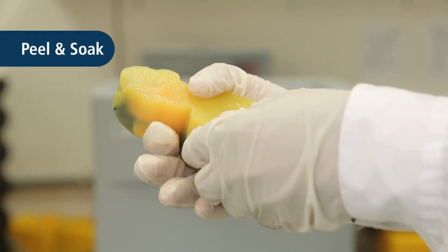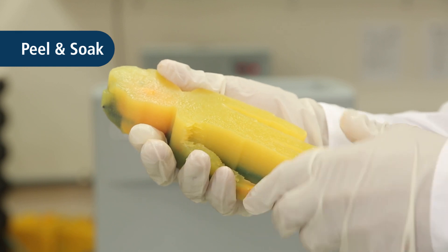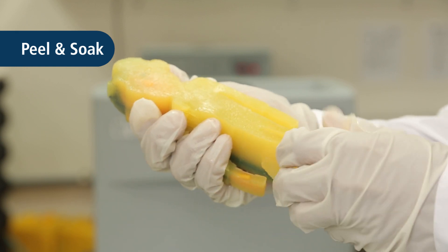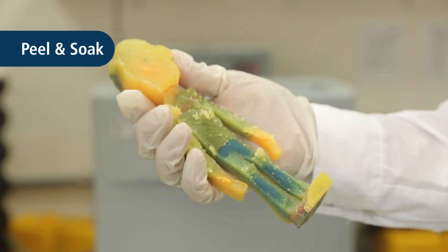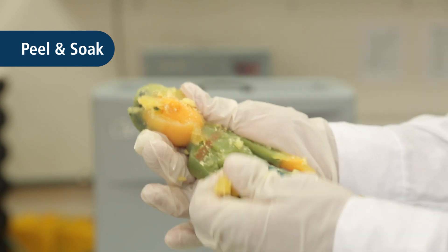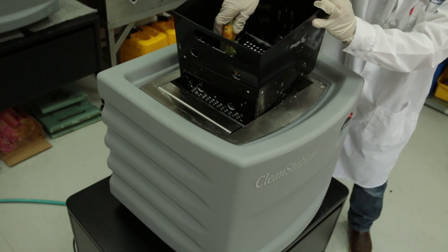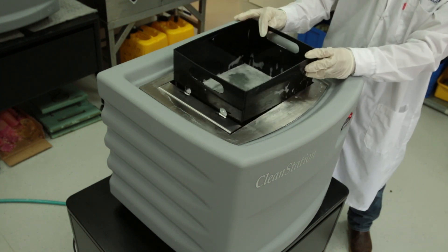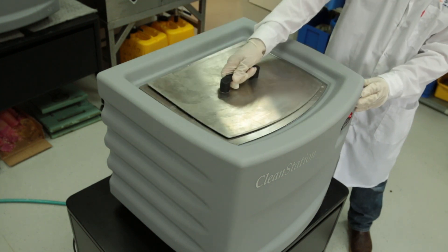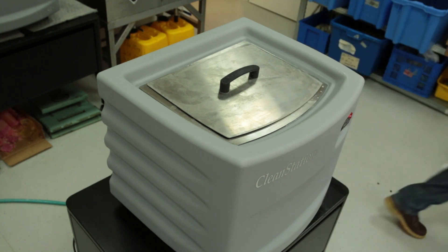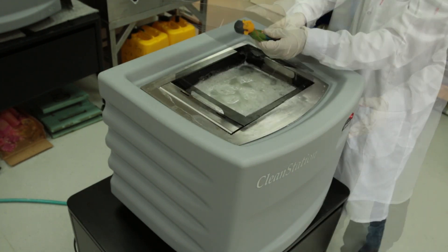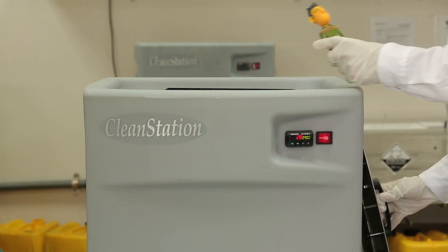The peel and soak method is especially effective for parts with thick layers of support material. First remove the support material manually. Then place the partially cleaned part in the cleaning solution to remove the remainder of the material. Once the support material has been dissolved, rinse the part in tap water.